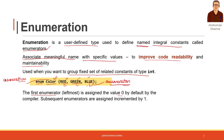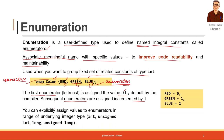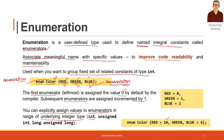By default, the first enumerator has the value 0 and subsequent enumerators are incremented by 1, so the next will be 1 and the next 2. You can also explicitly assign values to enumerators, and these values should be within the range of the integer type. For example, if we assign red equal to 10, the value associated with red will be 10. Then green will be incremented by 1 to become 11, and blue can be assigned an explicit value like 4.